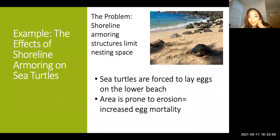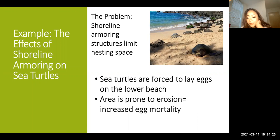Since shoreline armoring alters coastline environments, species that rely on these areas as habitat are impacted. One example is the construction of armoring structures on the nesting beaches of sea turtles — restricting access to upper beaches reduces the distribution of sea turtle nests along coasts due to lack of remaining space. Therefore, since eggs are forced to hatch in lower beach areas, there is an increased risk of egg mortality, especially due to beach erosion.